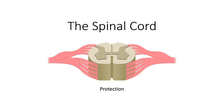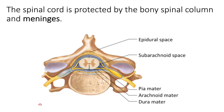Protection of the spinal cord is essential because the spinal cord, as well as the brain, consists of delicate nervous tissue — neurons and neural glial cells. In addition to the bone that surrounds the spinal cord, there are three meningeal layers that also aid in its protection. The three layers from outer to inner are the dura mater, the arachnoid mater, and the pia mater.